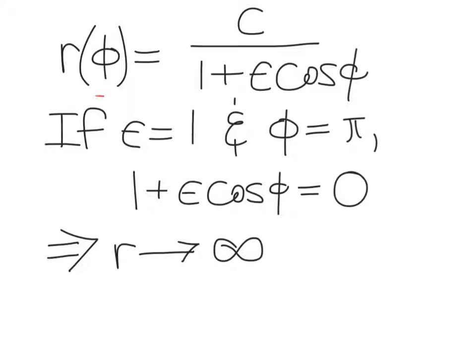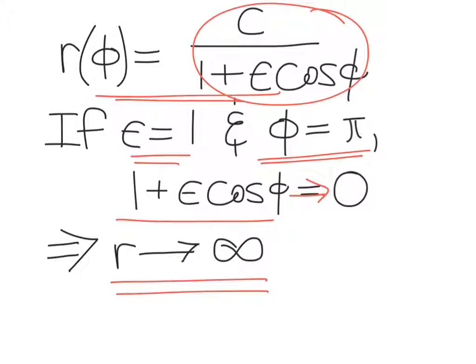So coming back to our equation for an orbit, r of phi, we find that if the epsilon value, the eccentricity for our orbit, is 1, then as phi approaches pi, 1 minus cos phi is going to go to 0. And when that happens, r is going to approach infinity. In other words, the radial distance between the two gravitating objects is going to become infinite.